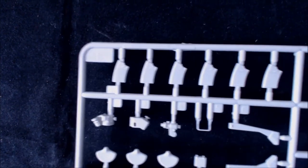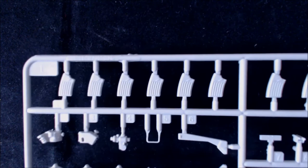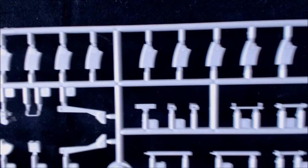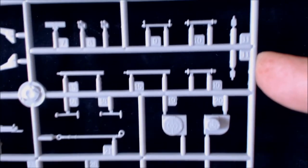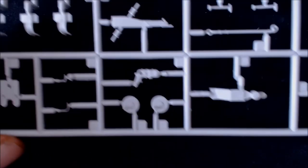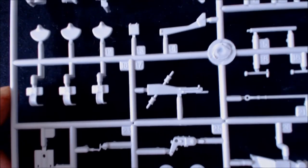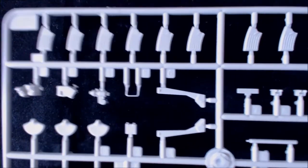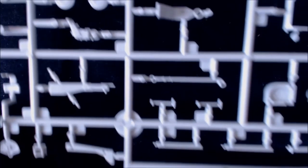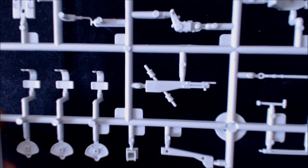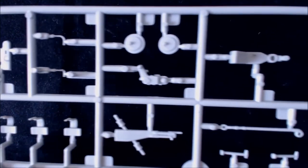This is sprue L. Lots of little bits on this and I ain't going to go through exactly what they are because I don't know. I know that the magazines are there. We've got some seats there which I can definitely see what they are. All lots of little bits and pieces. All nice and clean, there's going to be a little bit of seam line to clean up on some of them but nothing too mad.